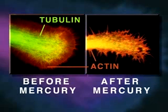Shown here is a neurite growth cone stained specifically for tubulin and actin, before and after mercury exposure. Note that the mercury has caused disintegration of tubulin microtubule structure.